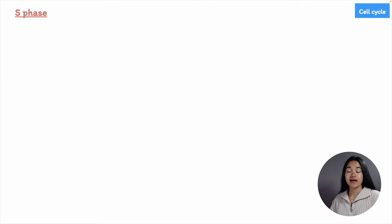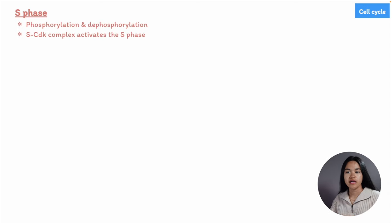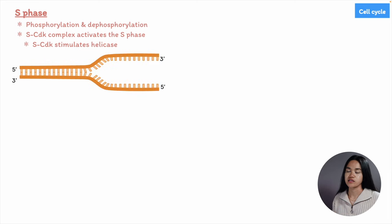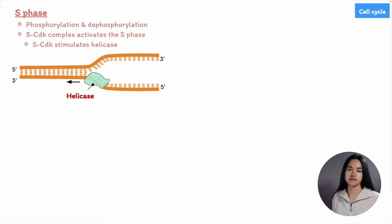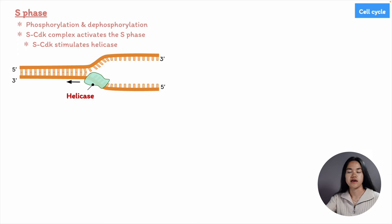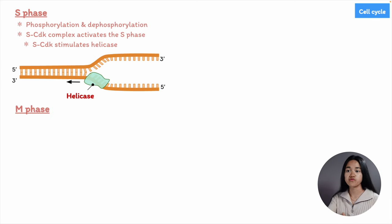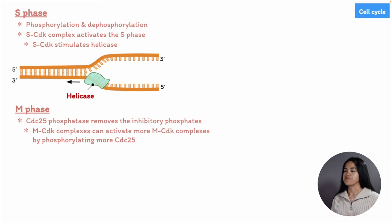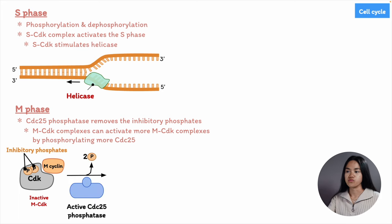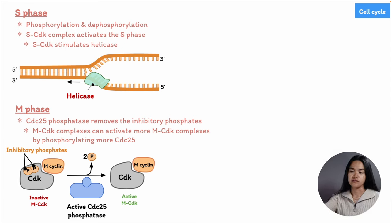Moving on to the S phase: the S-CDK complex activates the S phase. S-CDK is formed and activated at the end of G1. During the S phase, S-CDK stimulates DNA helicase, which unzips the double helix at the replication forks, separating the two strands for DNA synthesis using them as template strands. If there are any errors during DNA replication, the cell can delay entry into the M phase. For M-CDK to be active, inhibitory phosphates must be removed by the phosphatase CDC25, but if there's damage or error, the cell will prevent removal of those inhibitory phosphates, keeping M-CDK inactive until replication is complete and any damage is repaired.